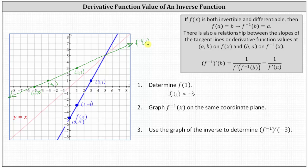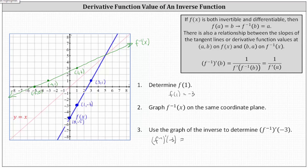And number three, we're asked to use the graph of the inverse to determine f inverse prime of negative three. Recall f inverse prime of negative three is equal to the slope of the tangent line to the graph of the inverse function at x equals negative three. So if we look at the graph of the inverse function graphed in green and locate the point where x equals negative three, which is this point here, because f inverse of x is a line, if we sketch a tangent line to a line, we get the same line, and therefore this derivative function value is equal to the slope of the inverse function.